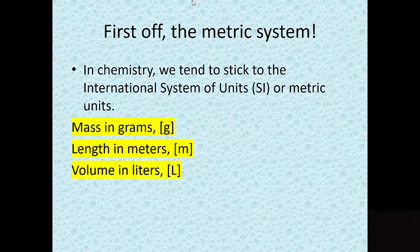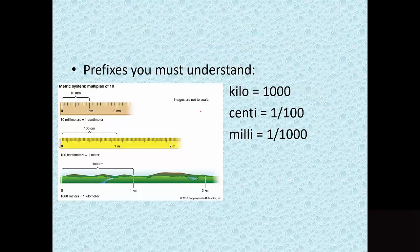In chemistry we tend to stick to the International System of Units — the SI system, often called the metric system. Mass is measured in grams, length in meters, and volume in liters. These are our preferred units, though we will occasionally convert from inches or pounds into the metric system.